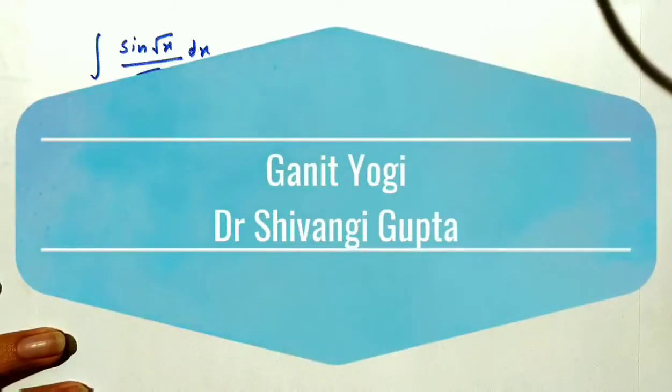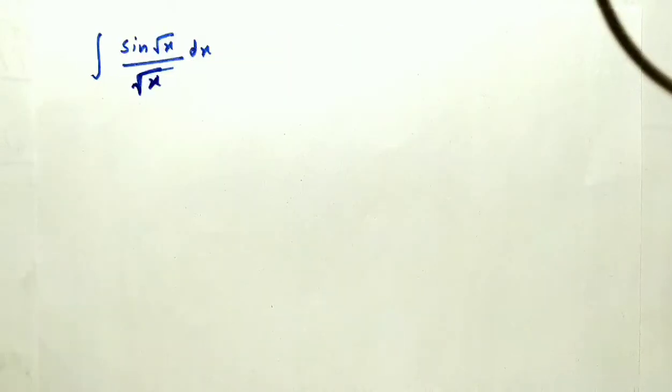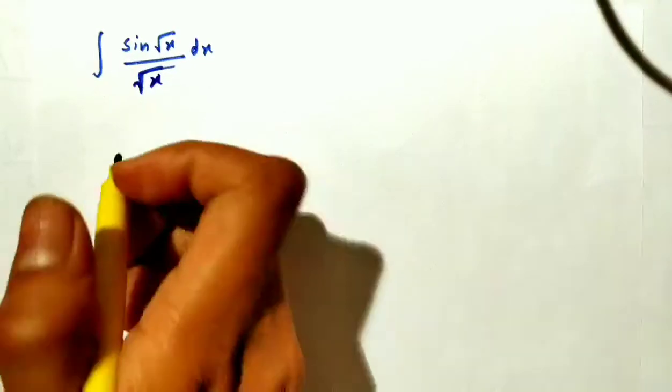Integration of sin(√x) over √x dx. So how can I solve it? If I take √x as t...